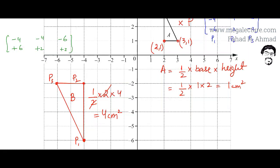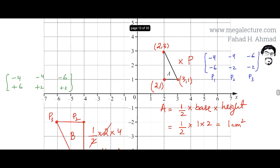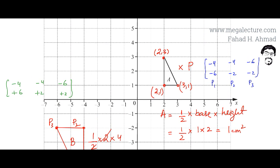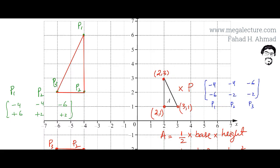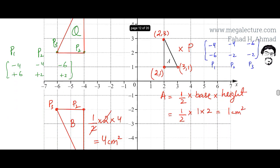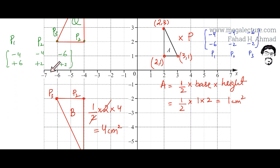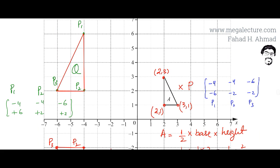Going back to the grid, I'll plot the three points of Triangle C. The first point is (minus 4, plus 6): minus 4 on the x-axis and plus 6 on the y-axis — that's point 1. The second point is (minus 4, plus 2) — that's point 2. The third point is (minus 6, plus 2) — that's point 3. Joining the lines gives Triangle C, which I'll label as C. Triangle B was below and it got reflected on the x-axis to become Triangle C.